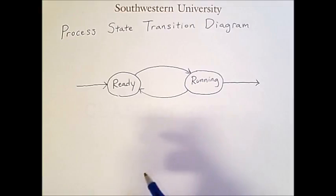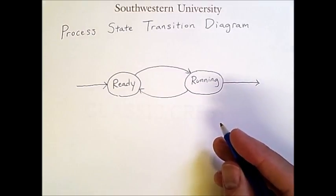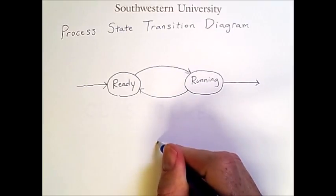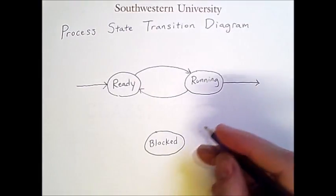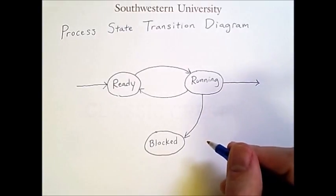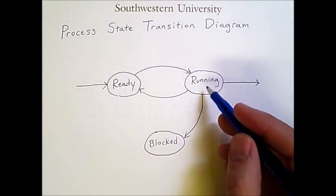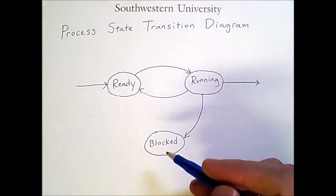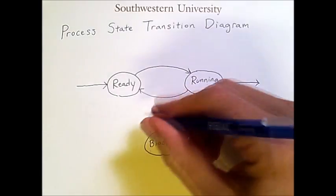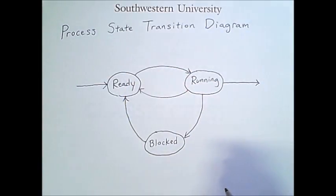Interrupts are often used for IO — input-output operations — because those are very time-consuming compared to fast CPU operations. So we're going to add a transition for a blocked state. This blocked state is very general; normally it corresponds to IO happening, but in general, if some event is being waited on, the process will go to a blocked state. When the event that the process is waiting for occurs, it will transition from a blocked state back to a ready state. This diagram is getting more complicated, so we need to think about why the different transitions occur.